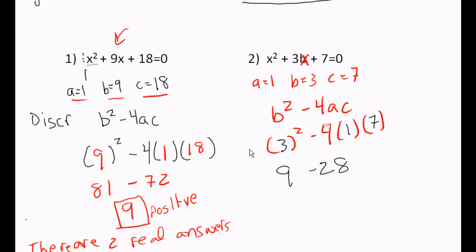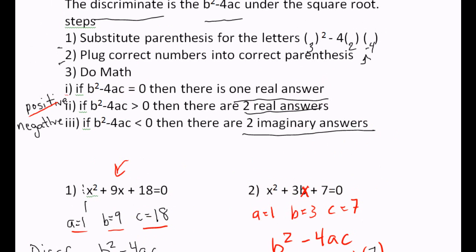9 minus 28 is a negative 19. That's our discriminant. Now we want to know how many solutions we have.